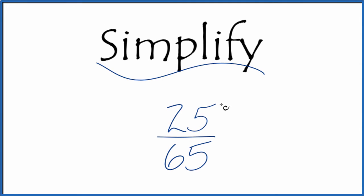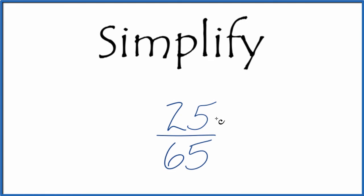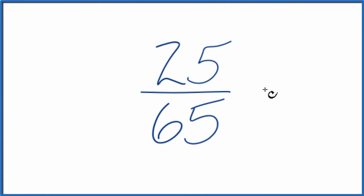If you need to simplify the fraction 25 65ths, here's how you can do that. What we want to do is find another fraction that's equivalent. It's equal to 25 divided by 65. It's just that we've reduced it or simplified it down to lowest terms.